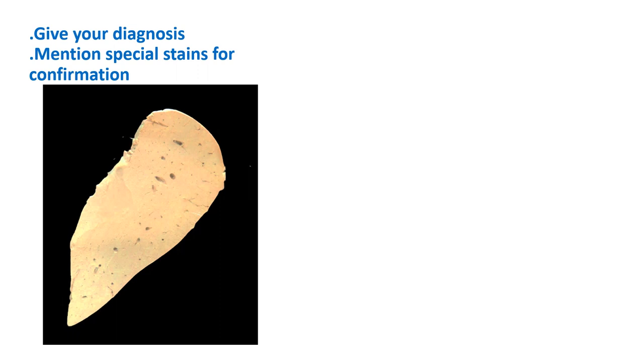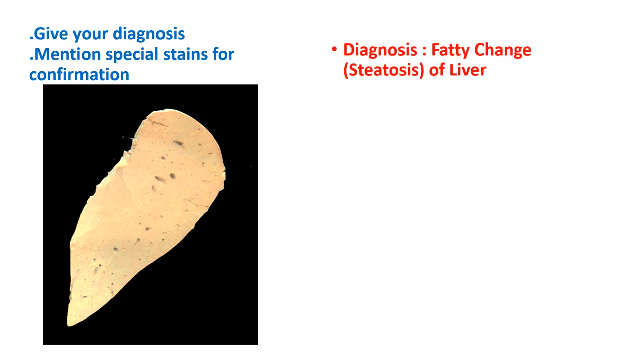This is again a slice of liver showing similar features — pale yellow color and a glistening capsule. So this is also a fatty change. An important question that may be asked is to mention the special stain for confirmation of this particular change. The diagnosis is fatty change, steatosis of the liver.